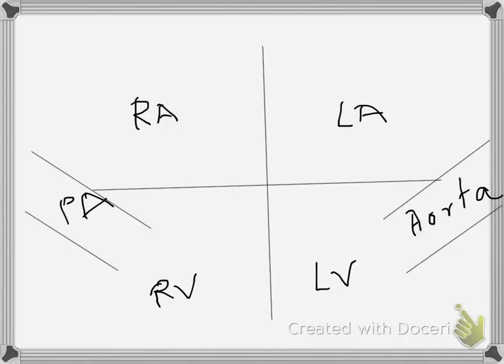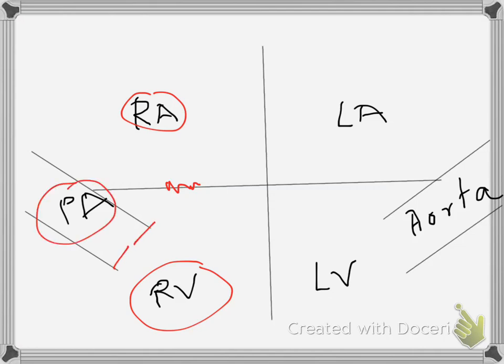Today we're going to talk about the pressures of the heart. This is my simplified drawing for the pressure of the heart, the different chambers of the heart. This is the right atrium, this is the tricuspid valve, this is the right ventricle, this is the pulmonic valve, this is the pulmonary artery, which goes to the lung.